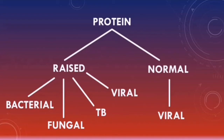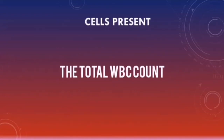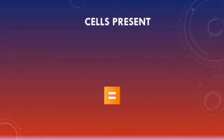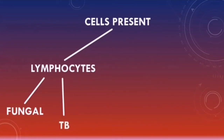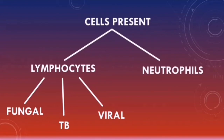The total white blood cell count is usually raised in meningitis due to an infection. If the cells present in the CSF are predominantly lymphocytes, that can indicate fungal, tuberculosis, or viral meningitis. If the cells present are predominantly neutrophils, that usually indicates a bacterial meningitis.